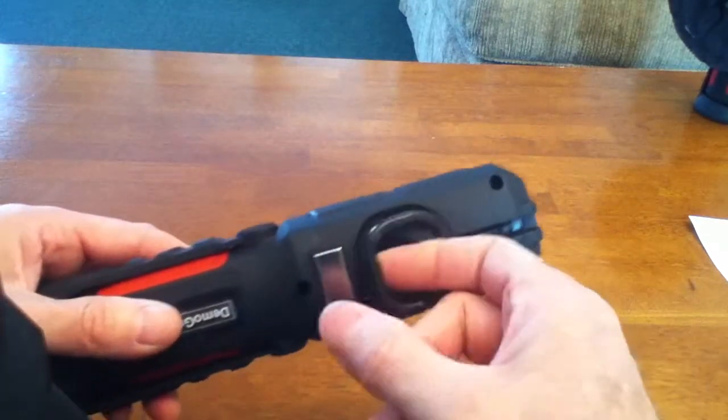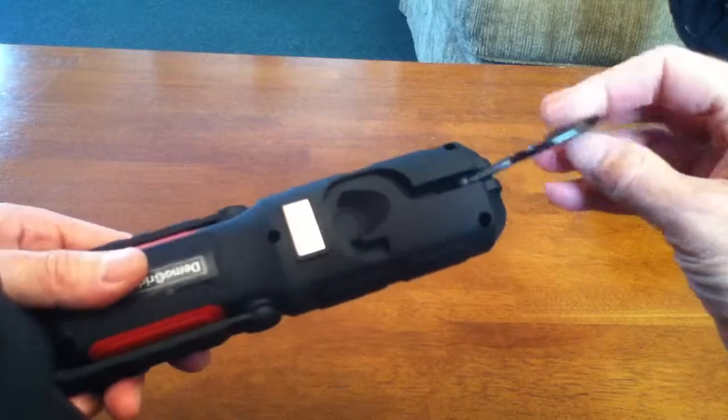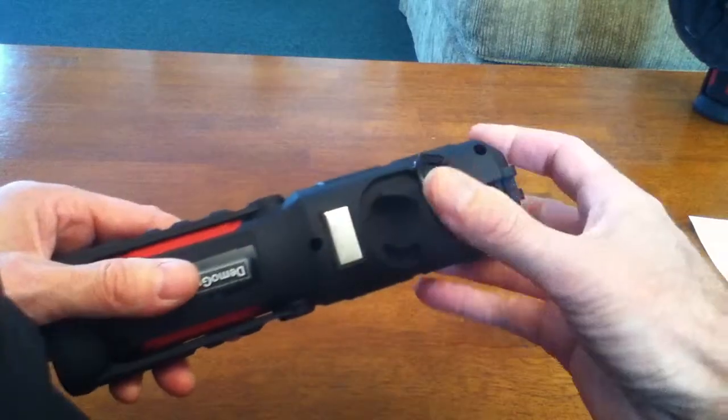On the back of the light is a swivel hook that allows you to hang up the light when you're working or for storage.